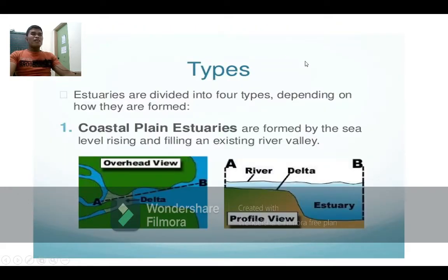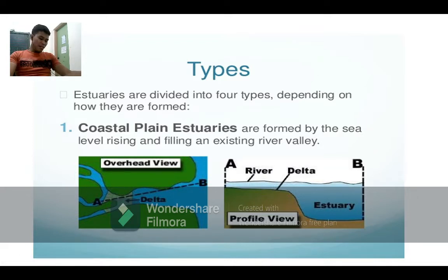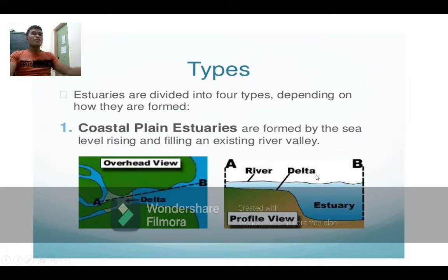Estuary is divided into four types depending on how they are formed. The first type is the coastal plain estuary. It is created or formed when sea level rises and falls. Looking at the picture, this is the river, this is the delta, and here is the estuary.